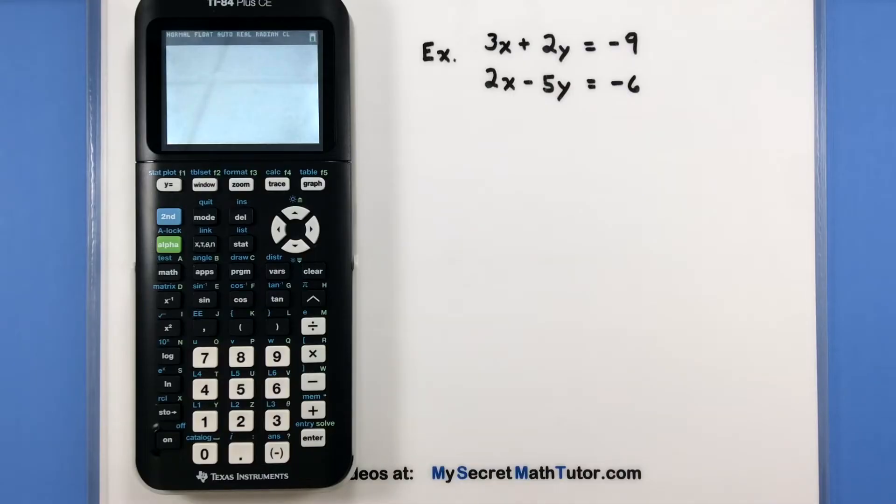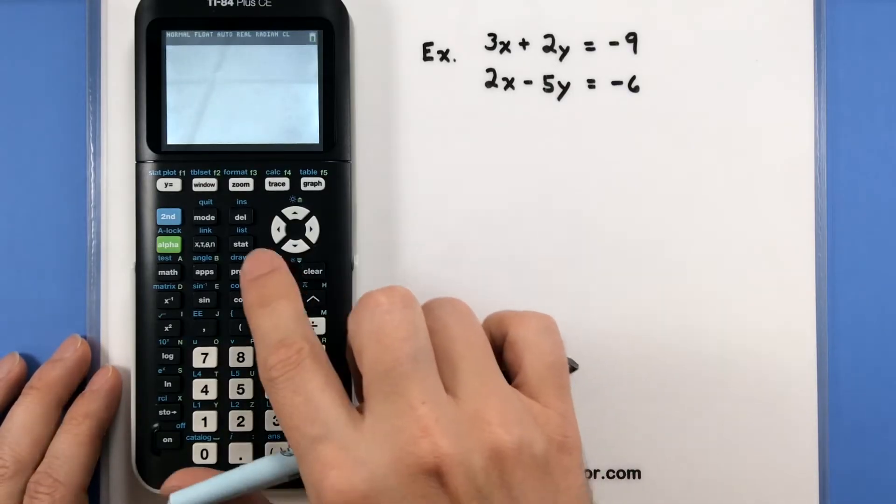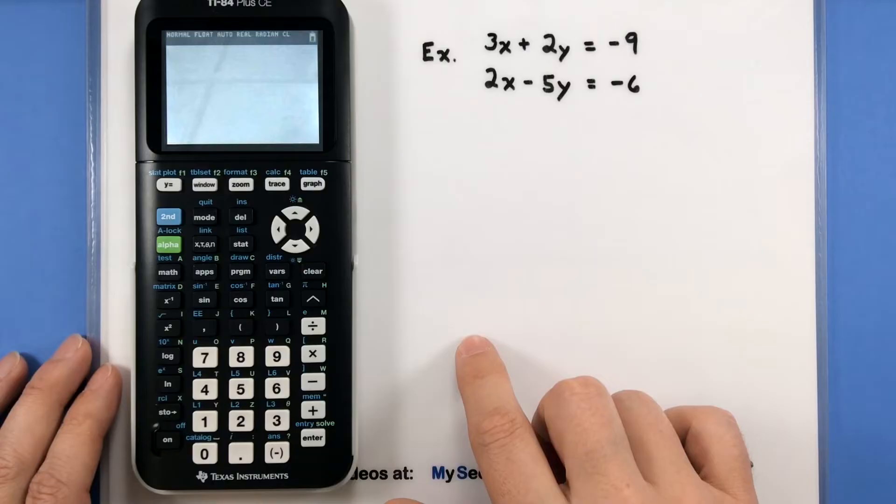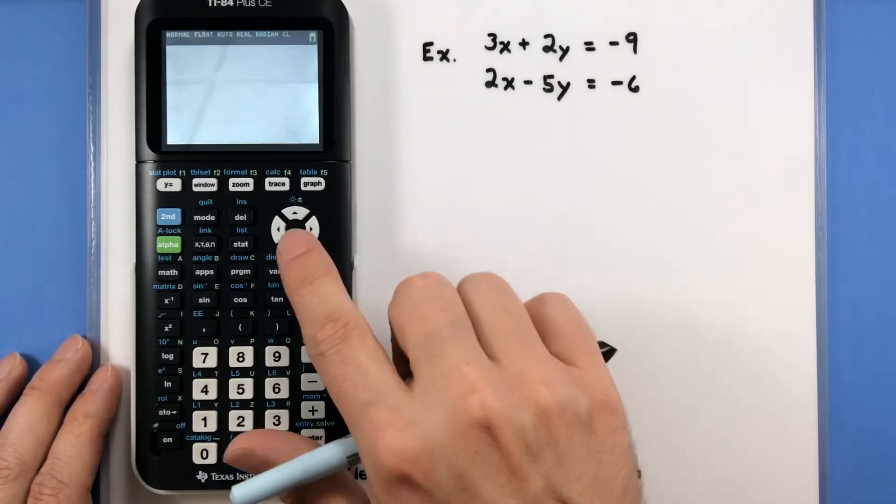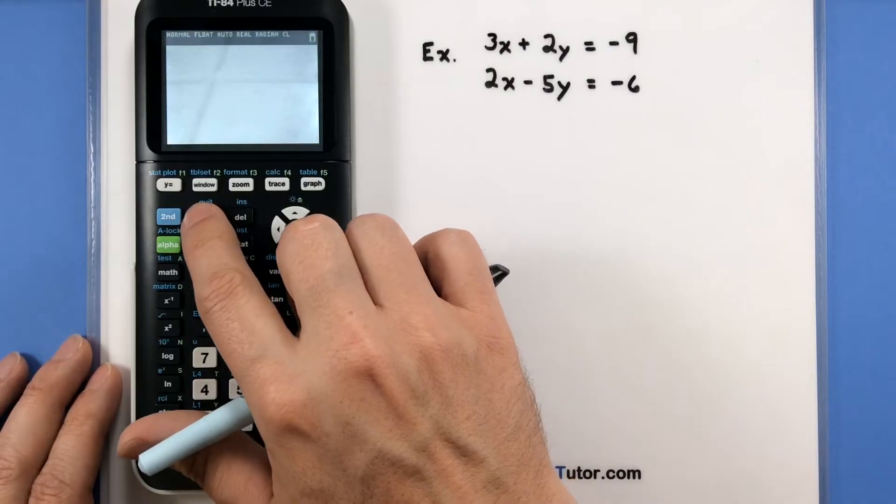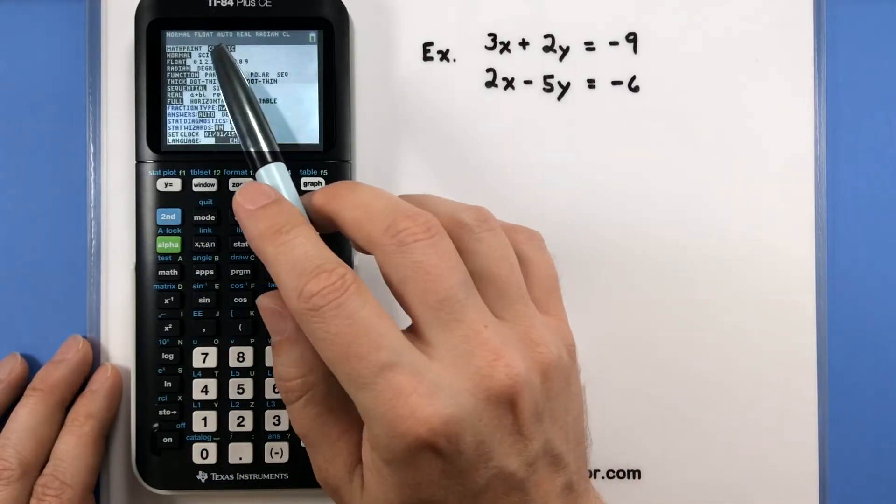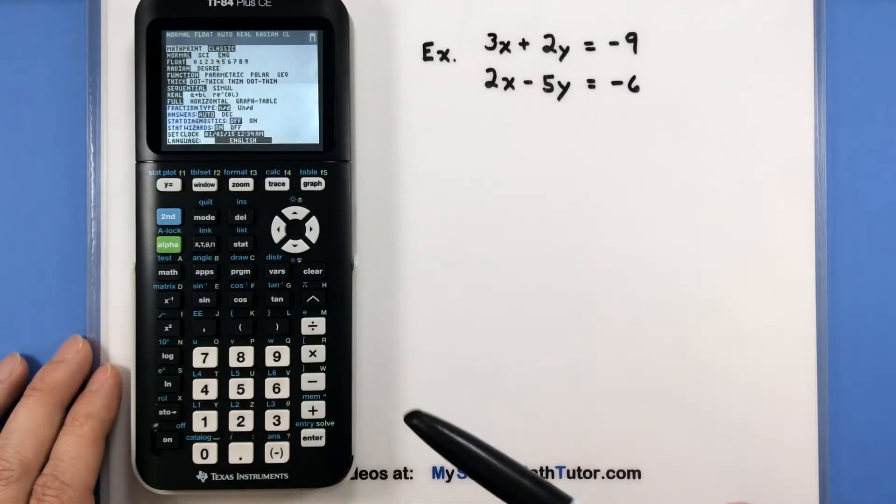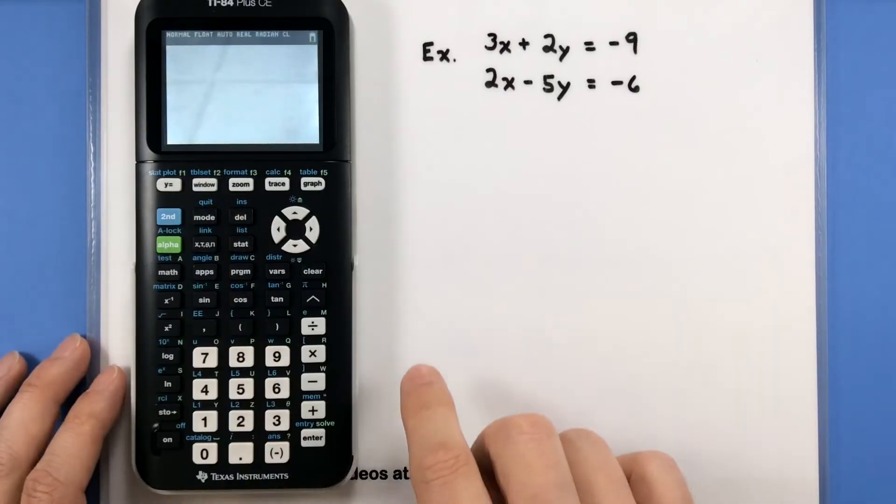Other minor changes that you may have noticed is I like to keep mine on classic mode. If it looks slightly different than what you're looking at, go ahead and go to mode, and you can select it for either math print or classic. I like to keep mine on classic.